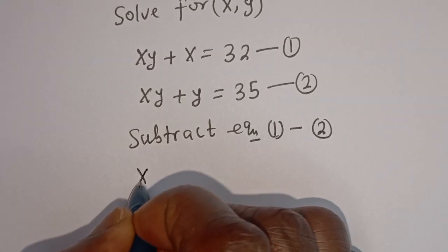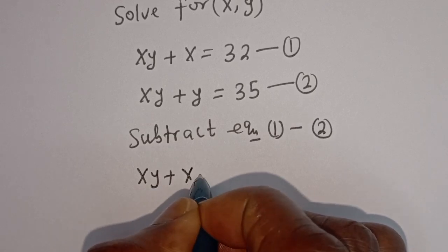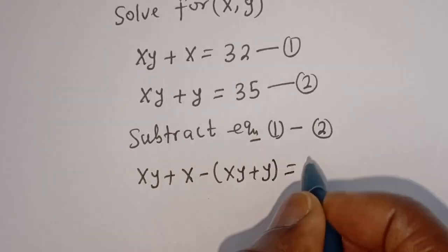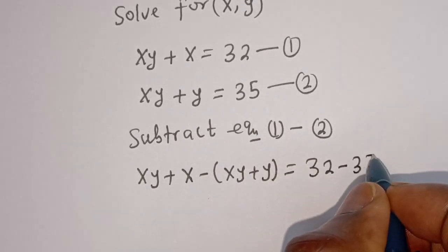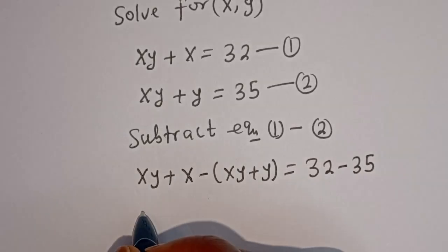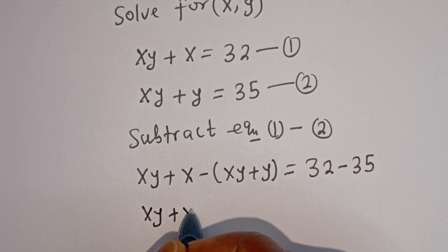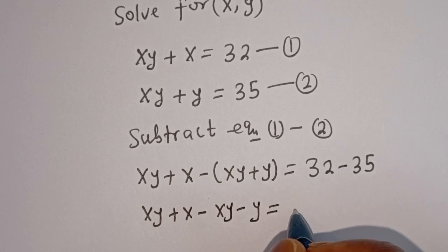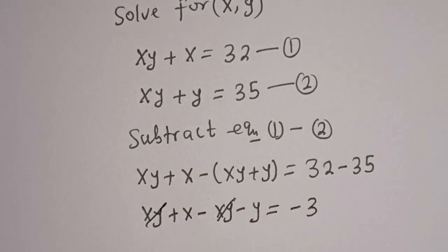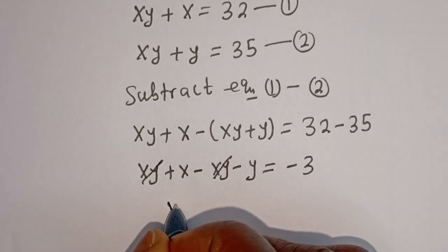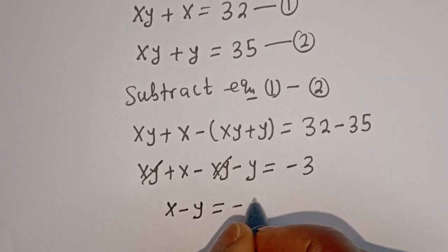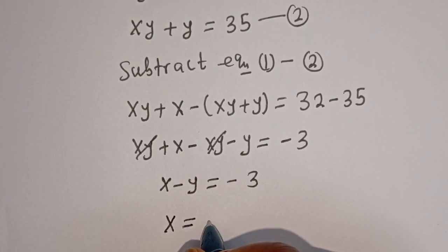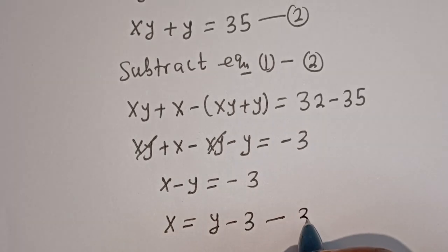We have x y plus x minus x y plus y equal to 32 minus 35. The x y terms cancel, giving us x minus y equal to minus 3. Therefore x is equal to y minus 3. Let's call this equation 3.